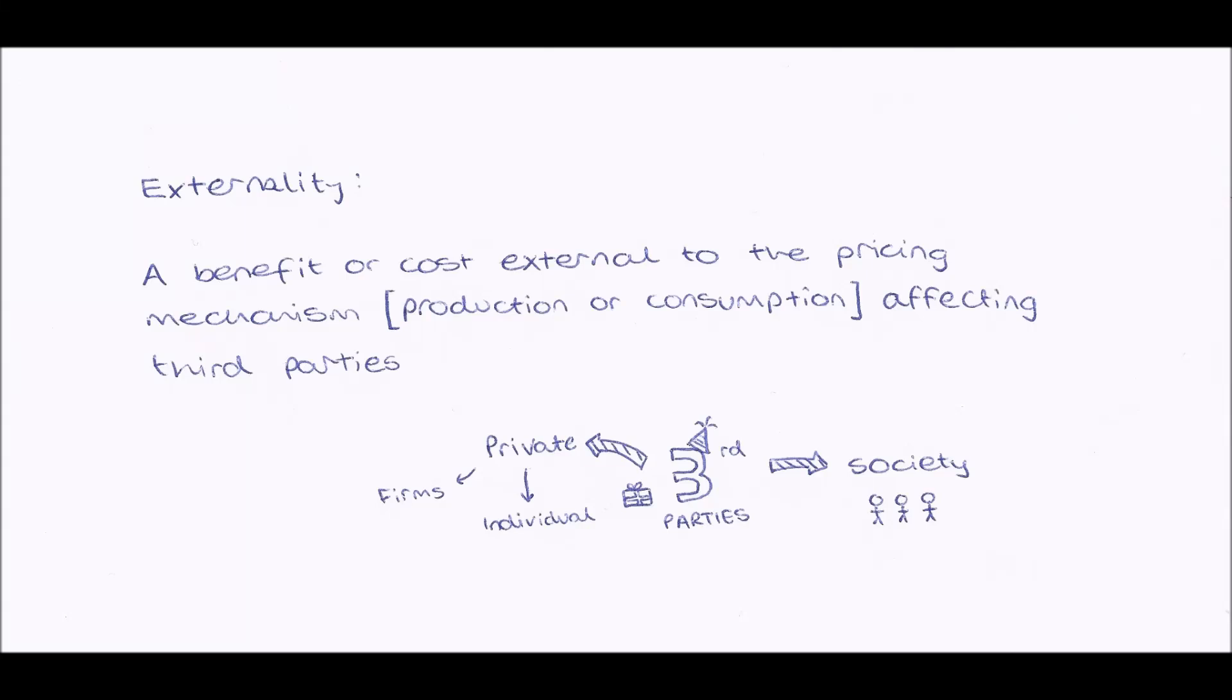Hello everybody and welcome to this microeconomic video on externalities. So firstly, what is an externality? Well, an externality is defined as being a benefit or cost, so something that's good or bad, which is external to the pricing mechanism. So this means that it is a knock-on effect of production or consumption.